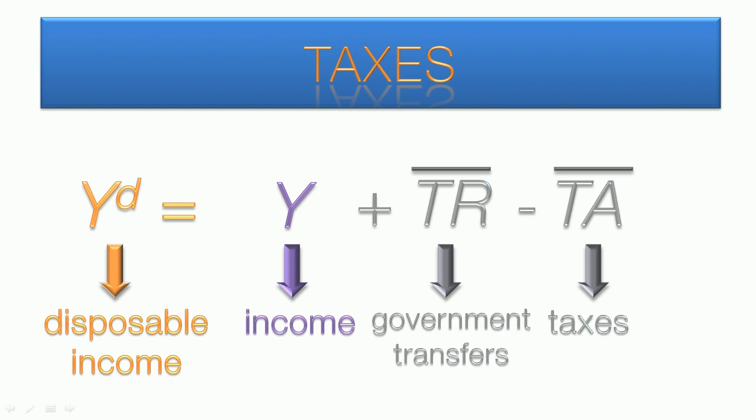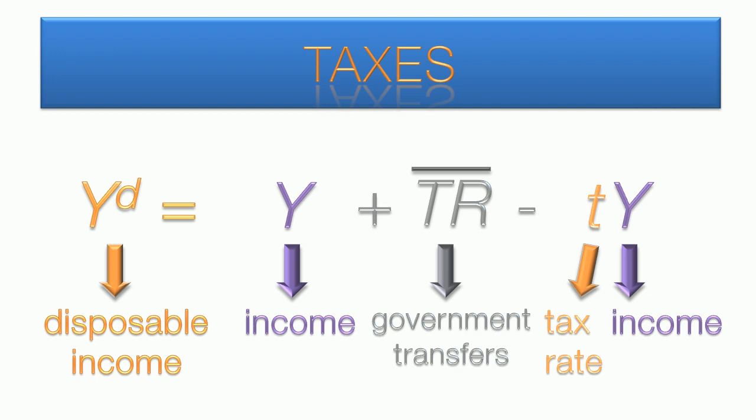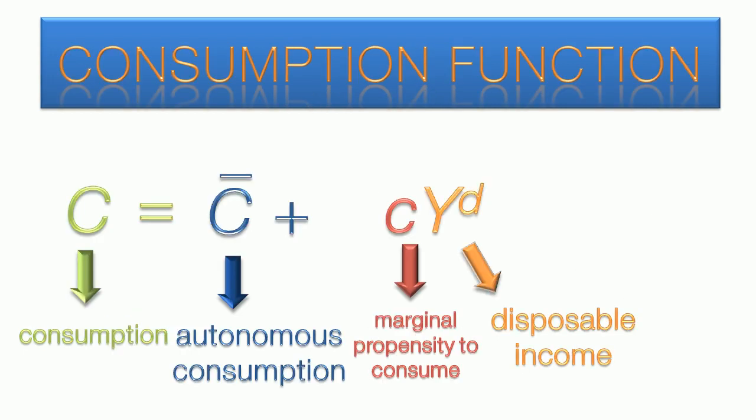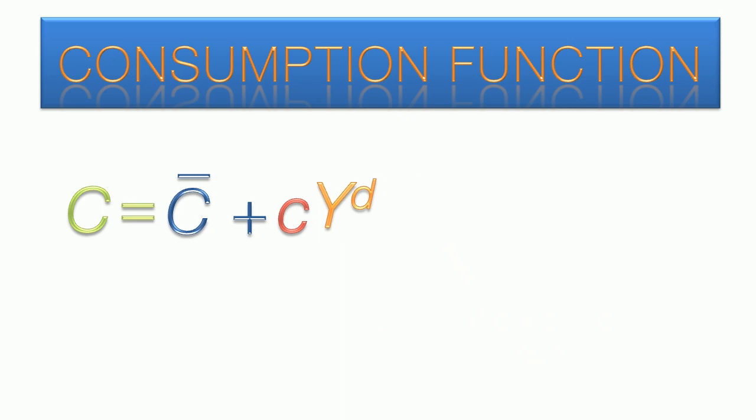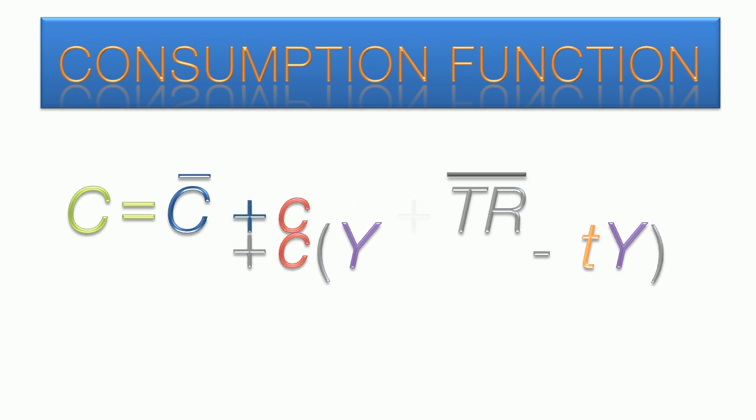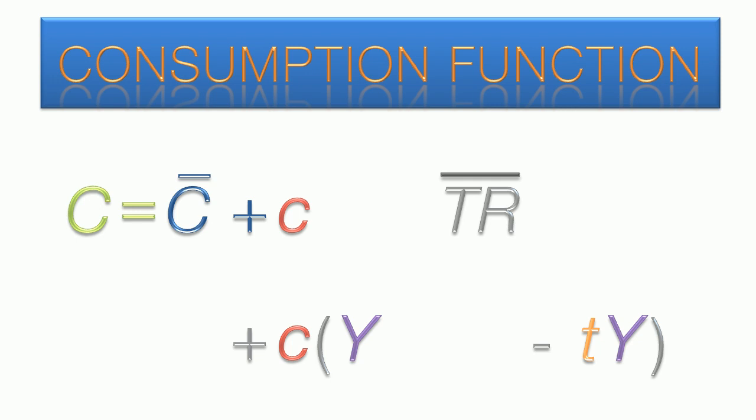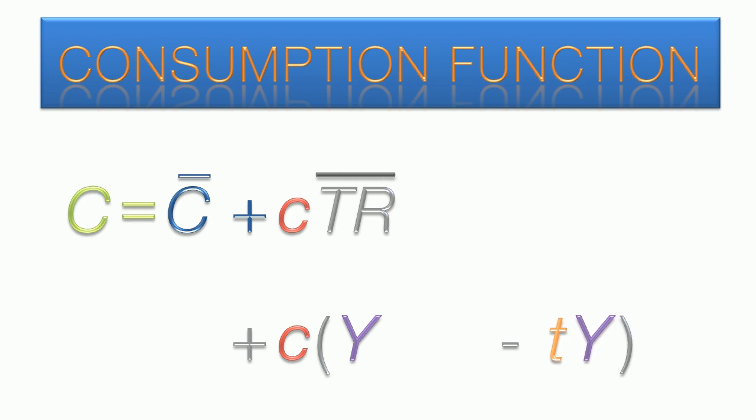Now that our disposable income has taxes incorporated into it, we're going to plug it back into the consumption function. Here is the consumption function as previously shown. Disposable income is now replaced with the tax rate formula. Some simple algebraic factoring will clean up this formula. The terms with income in them are grouped together, leaving the transfer payments to be multiplied by MPC. To simplify the bottom term, Y is taken out of the bracket, leaving 1 minus taxes all multiplied by MPC.